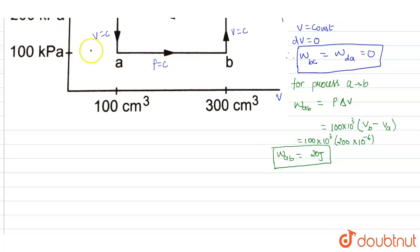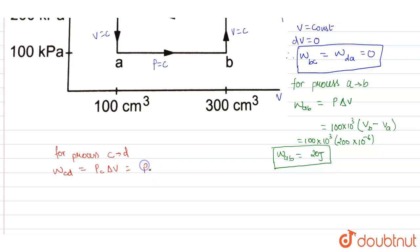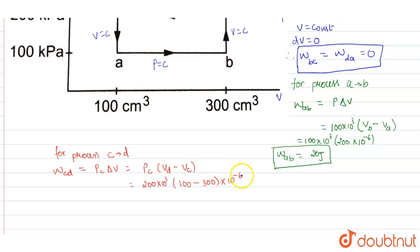For process CD, the work done is pressure at C times change in volume. The pressure at C is 200 kilopascal = 200 × 10³ Pa. The change in volume is volume at D minus volume at C = 100 cm³ minus 300 cm³ = -200 cm³. Converting to m³ by multiplying by 10⁻⁶, the work done in process CD is minus 40 joules.